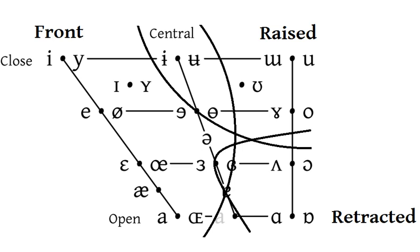Rounding is generally realized by a decrease of F2 that tends to reinforce vowel backness. One effect is that back vowels are most commonly rounded while front vowels are most commonly unrounded. Another is that rounded vowels tend to plot to the right of unrounded vowels in vowel charts.